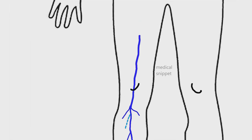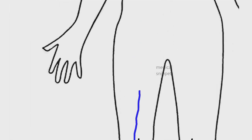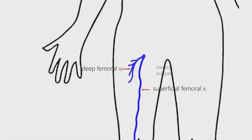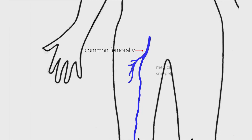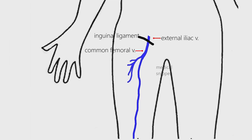The superficial femoral vein unites with the deep femoral vein to form the common femoral vein. The common femoral vein continues as the external iliac vein as it passes deep to the inguinal ligament.